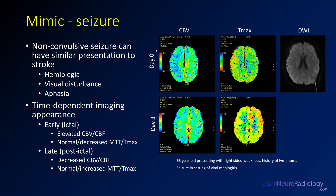Here you see a patient who presented with a seizure. On the day of their seizure, with right-sided weakness suggesting a left hemisphere abnormality, you can see abnormal white matter and the whole left hemisphere has elevated blood volume — it's actually increased. The Tmax, on the other hand, is relatively maintained. By day three, blood volume has decreased to more normal or slightly decreased on that side, with more blue areas in the left hemisphere, while Tmax remains normal. This patient had an MRI showing no diffusion abnormality, so we're not dealing with stroke. In the late phase, blood volume can be slightly decreased and MTT or Tmax can be normal or slightly increased.